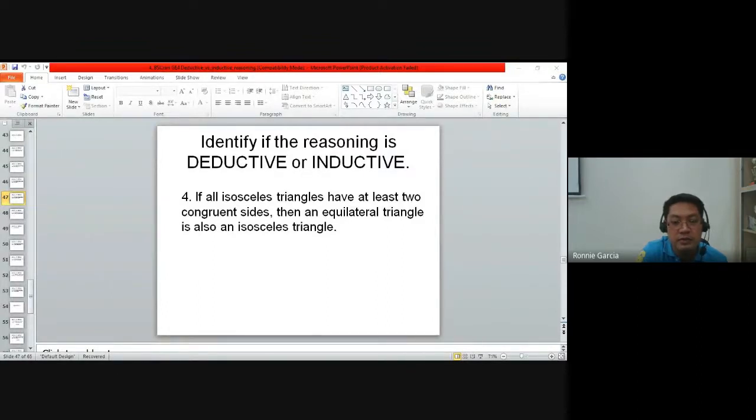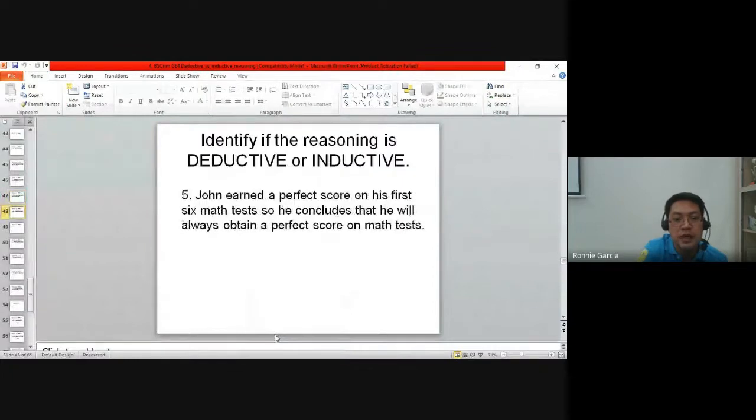Number five: John earned a perfect score on his first six math tests, so he concludes that he will always obtain a perfect score on math tests.